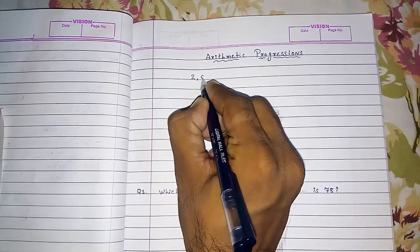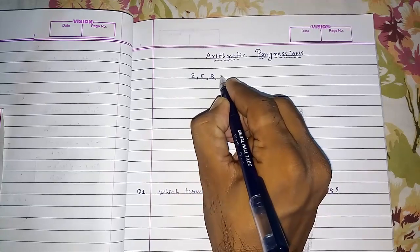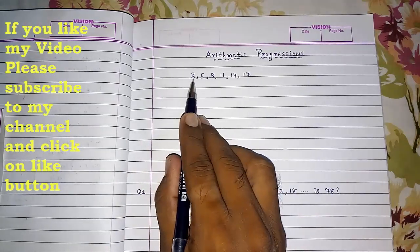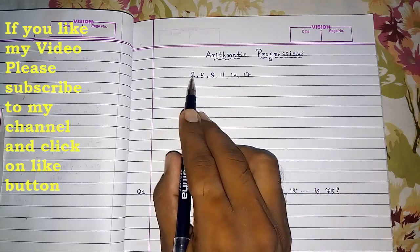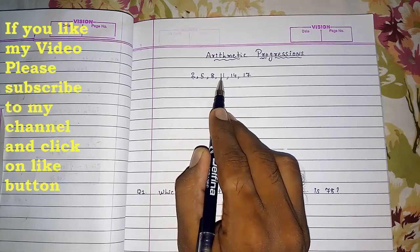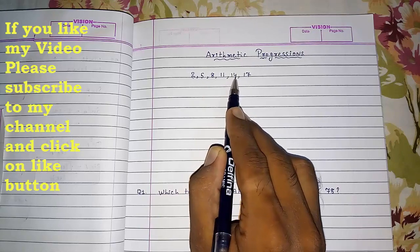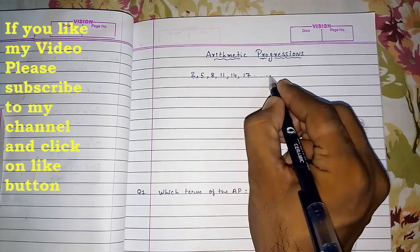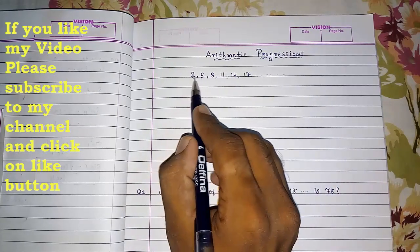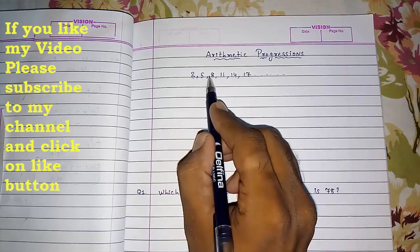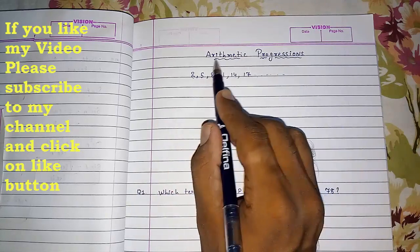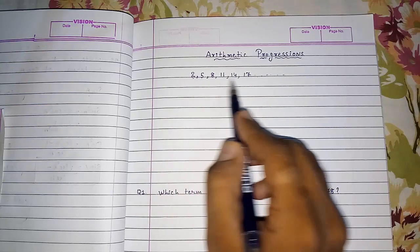2, 5, 8, 11, 14, 17. You can see this. Here you can see that after 2 if I add 3, 2 plus 3 equals 5. 5 plus 3 equals 8. 8 plus 3 equals 11. 11 plus 3 equals 14. 14 plus 3 equals 17 and so on. So here this number is having a progress and that progress is of the same number 3, 3, 3. So when you are having progress in same number then that progress is called arithmetic progression and it is called an AP.